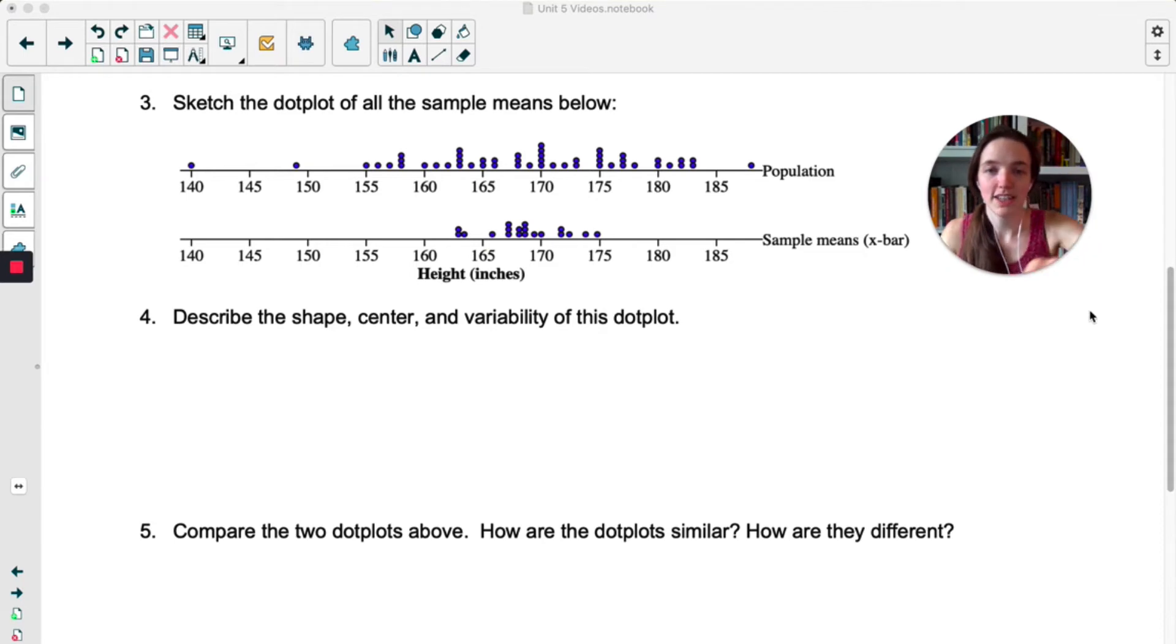Okay, so here's what mine looks like. Before we answer any of these questions, let's just think. For the population, each of these dots represents one individual high school senior. The dot represents their height. In the sample means distribution, each dot represents one sample of five, and it's the mean from that sample of five.